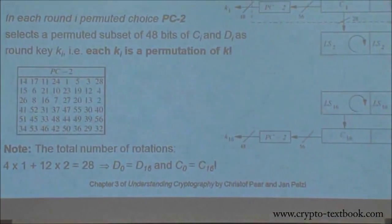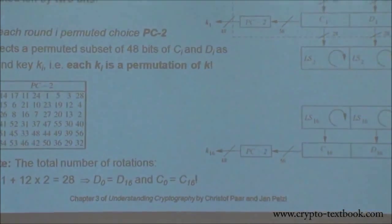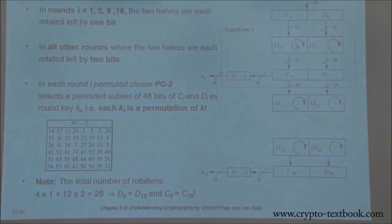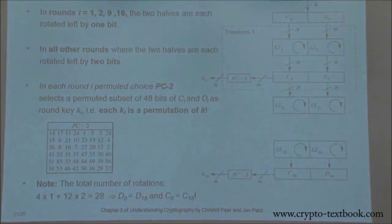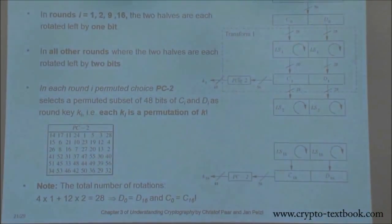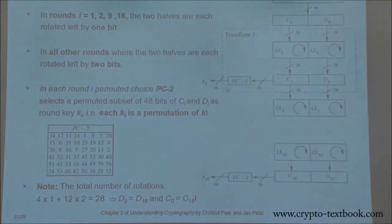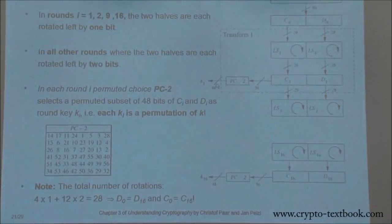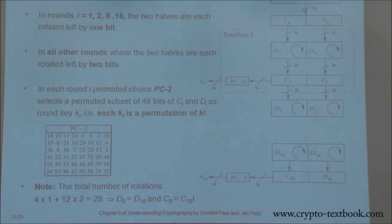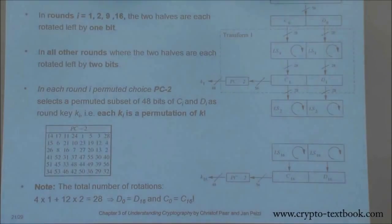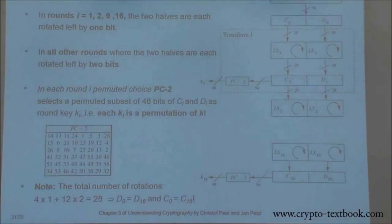If you look here, we just rotate — and rotation is a form of permutation. Then we do another permutation. That means these 48 bits are just a selection of certain bits from the 56 bits coming in: you pick certain 48 bits, and this is your sub-key k1.